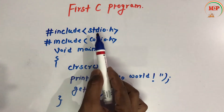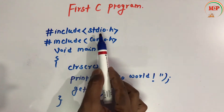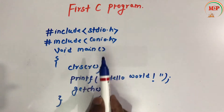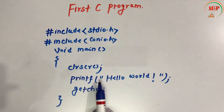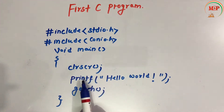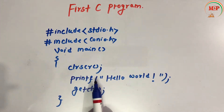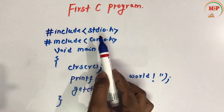stdio.h means Standard Input Output .h. In my program I have used printf, which interacts with the standard output device. So the definition of printf is found in the stdio.h header file.